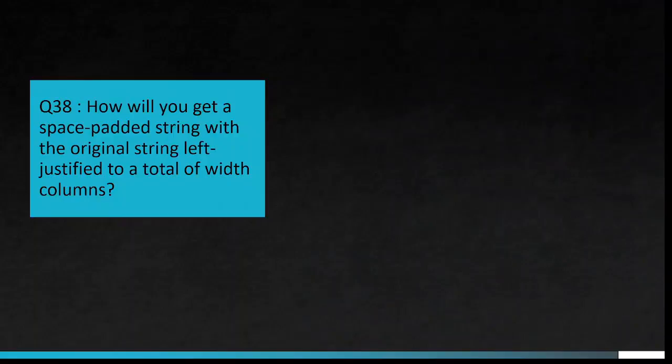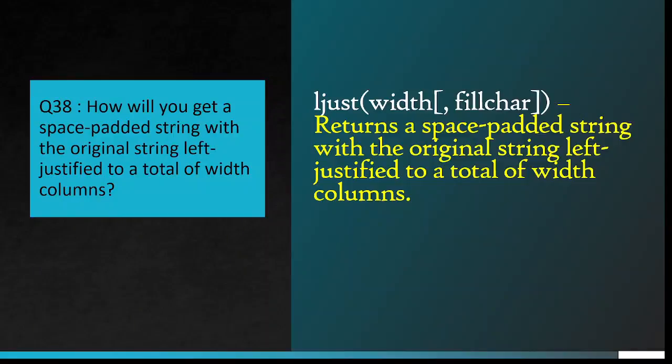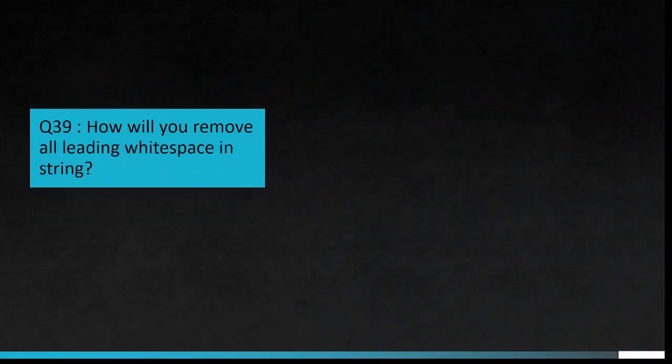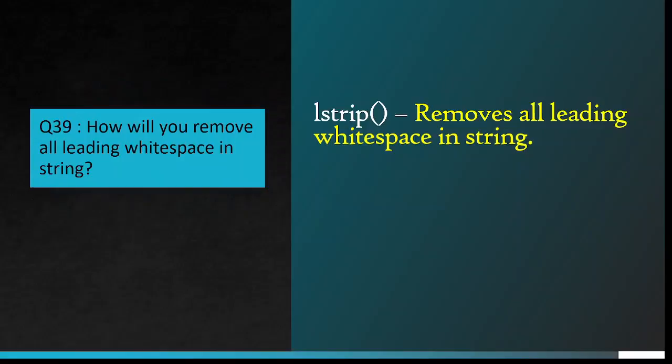Question number 38: How will you get a space padded string with the original string left justified to a total of width columns? ljust(width, fillchar) returns a space padded string with the original string left justified to a total of width columns. Question number 39: How will you remove all leading whitespace in string? lstrip() removes all leading whitespace in string.